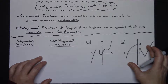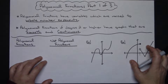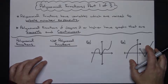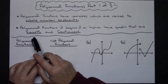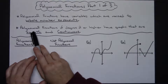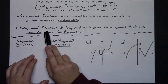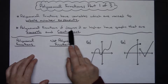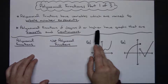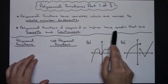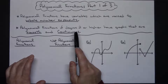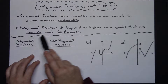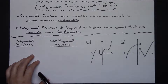We're also going to take a look at the graphs of some different functions and determine whether or not they're polynomial functions. You need to remember that polynomial functions of degree 2 or higher have graphs that are smooth and continuous. Those two key points are smooth and continuous.